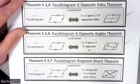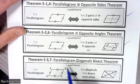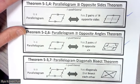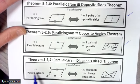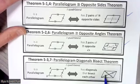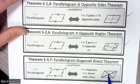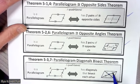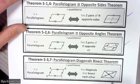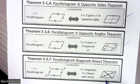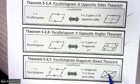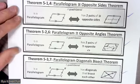The last theorem for today — and its converse — is the Parallelogram Diagonals Bisect Theorem. A quadrilateral is a parallelogram if and only if its diagonals bisect each other. That means the diagonals split each other in half at their intersection, making this segment congruent to that segment, and this segment congruent to the other. We don't know if the diagonals are congruent to each other — just that the intersection splits both in half.